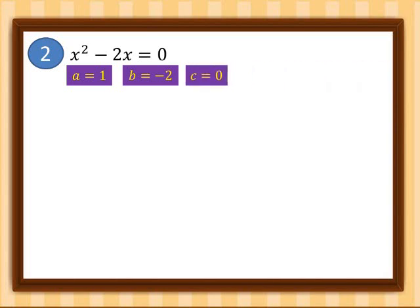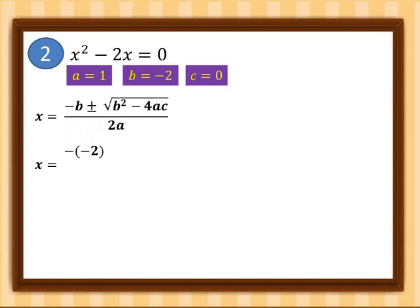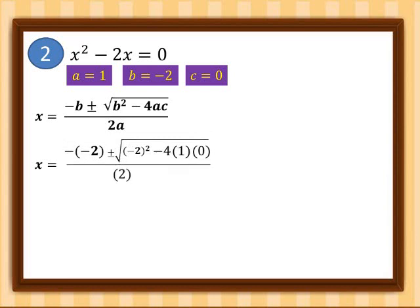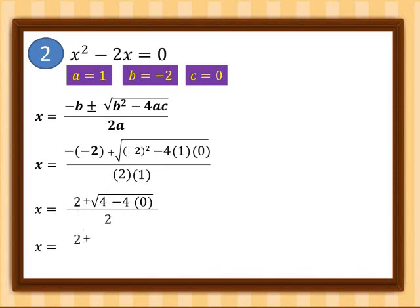Using the quadratic formula: x = (−(−2) ± √((−2)² − 4·1·0)) / (2·1). Simplifying: −(−2) = 2, and (−2)² = 4, so we have (2 ± √(4 − 0)) / 2, which gives (2 ± √4) / 2.